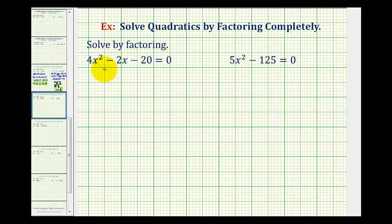Looking at our first example, we have 4x squared minus 2x minus 20 equals zero. So the first thing we should do is look for a common factor, and notice that all these terms do have a common factor of two.